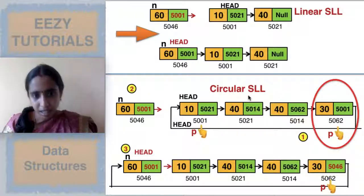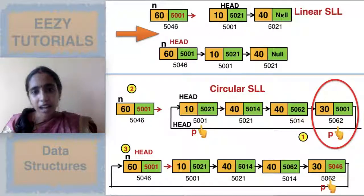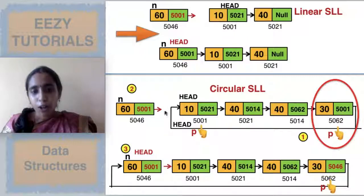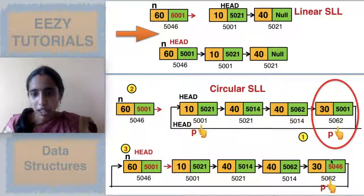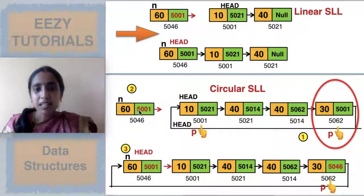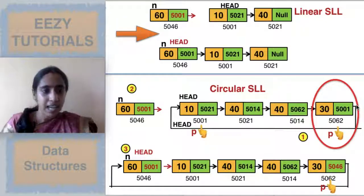In the singly circular linked list we have one extra task, because in a linear linked list the last node is null, whereas in a circular linked list the last node's next part points to head. So if you are inserting a new node at the beginning, the last node's next should be updated to point to the new node's address. This is an extra task.